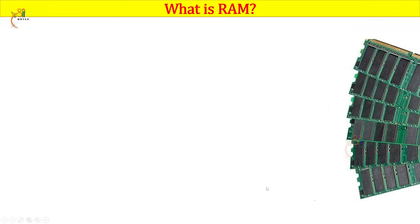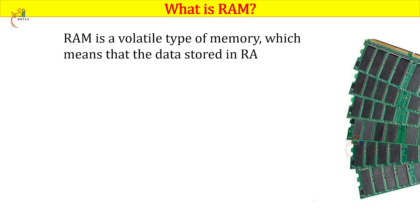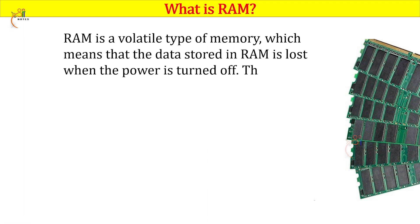RAM is a volatile type of memory, which means that the data stored in RAM is lost when the power is turned off.